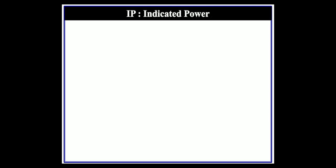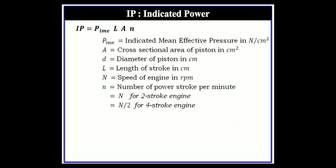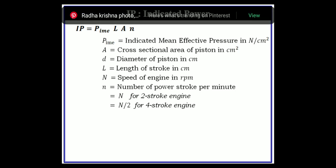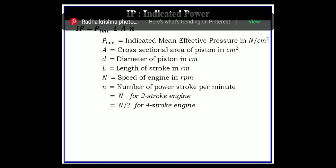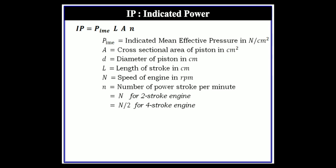The next parameter is indicated power. To remember the formula, we call it PLAN: P stands for indicated mean effective pressure, L for stroke length, A for cross-sectional area (based on piston or bore diameter), and n for number of power strokes per minute. For a two-stroke engine, n equals N (revolutions per minute); for a four-stroke engine, n equals N/2.